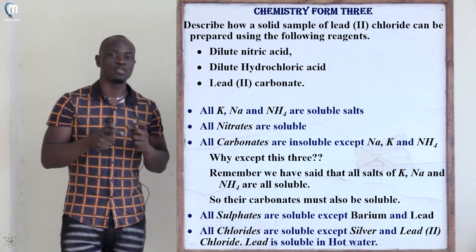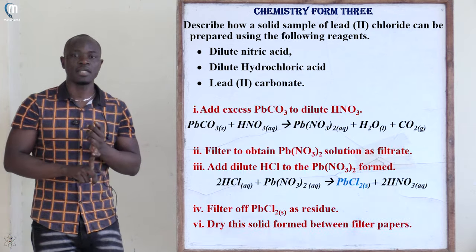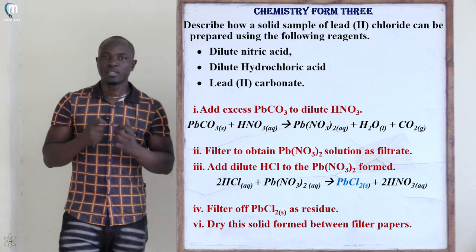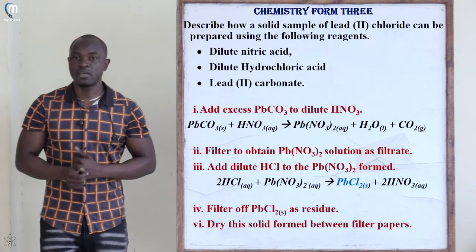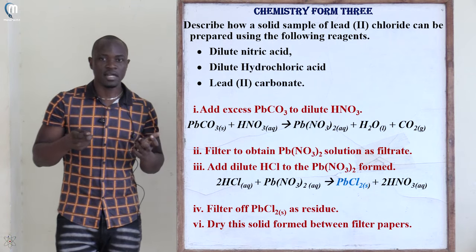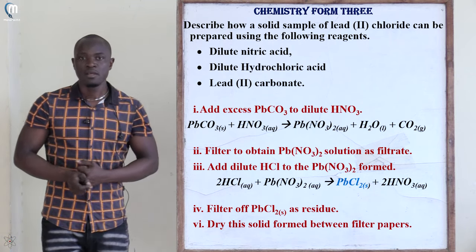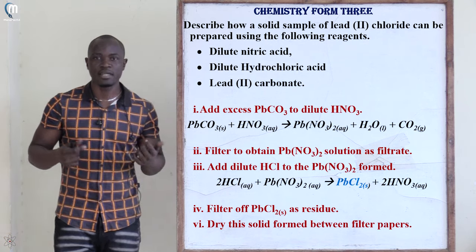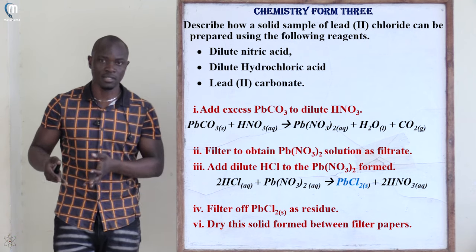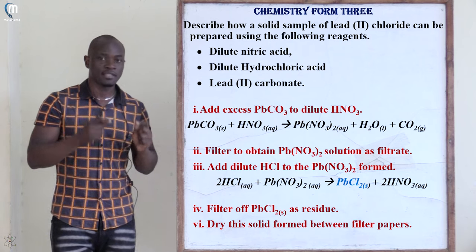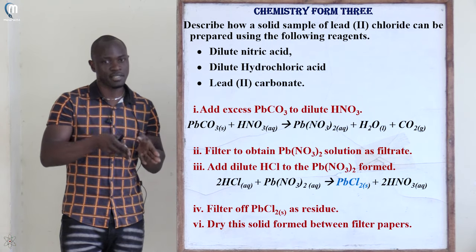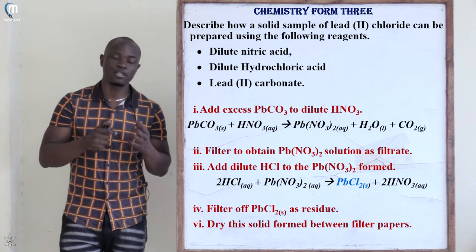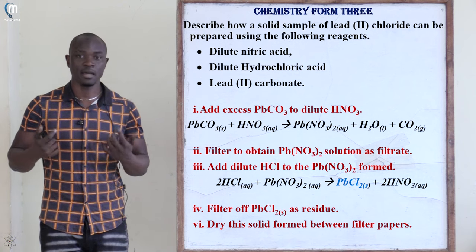We need to prepare lead(II) chloride using dilute hydrochloric acid, dilute nitric acid, and lead(II) carbonate. The first step is to add excess lead(II) carbonate to dilute nitric acid in a beaker. You must add excess — if you omit the word 'excess', you will get it wrong.